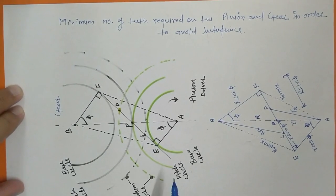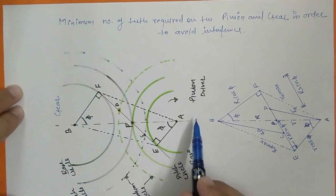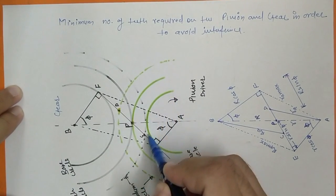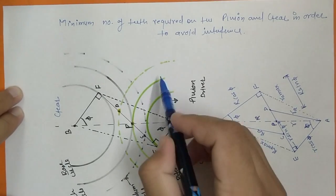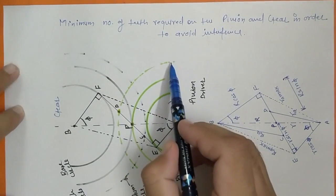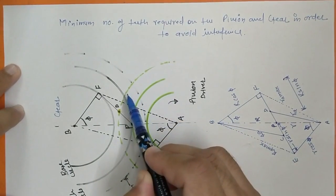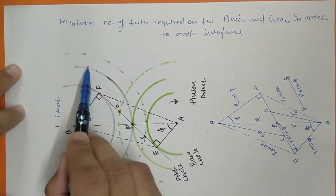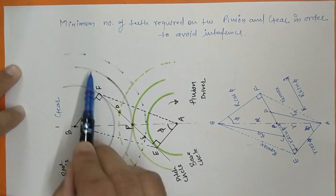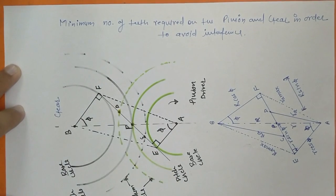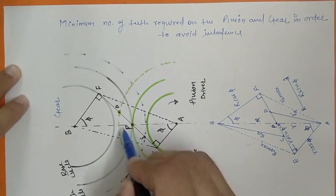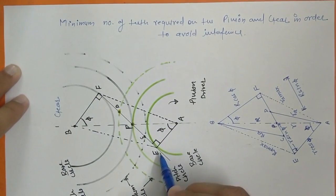To understand this, we look at the geometry. This is the pinion which is the driver, and this is the gear. This circle represents the base circle of the pinion, this circle is the pitch circle, and this is the addendum circle. Similarly, in the gear this is the base circle, this is the pitch circle, and this is the addendum circle. Now if we draw a pressure line which is tangent to the base circle of both gears.